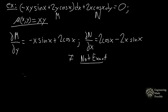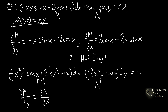Now that we have this mu function, let's multiply both sides of the differential equation and test again if it's exact. After distributing mu on both sides, once you get the partial derivatives of M with respect to y and N with respect to x, you will find that they are in fact equal to each other, so it is exact. Initially it was non-exact; multiplying the integrating factor mu makes it exact so you can then solve accordingly.